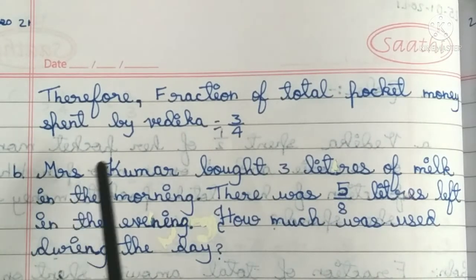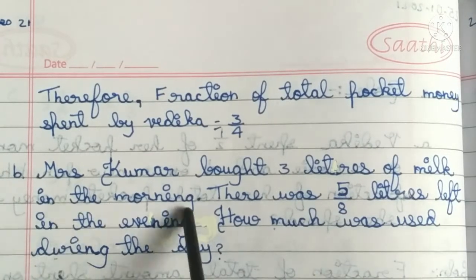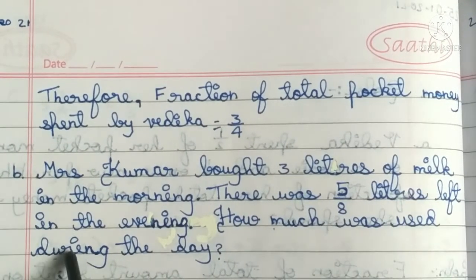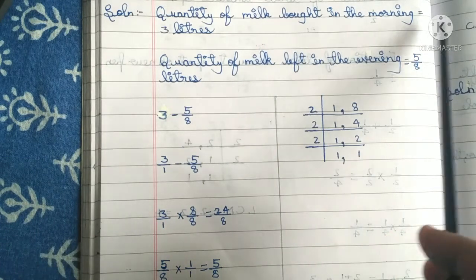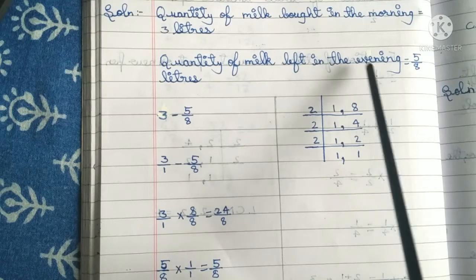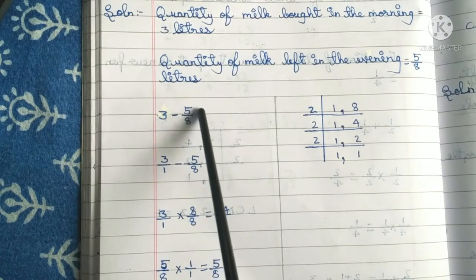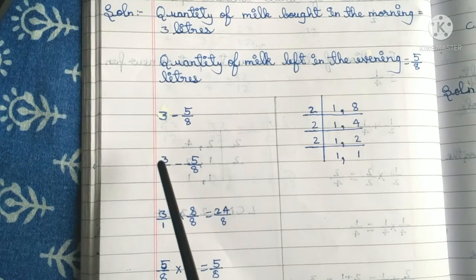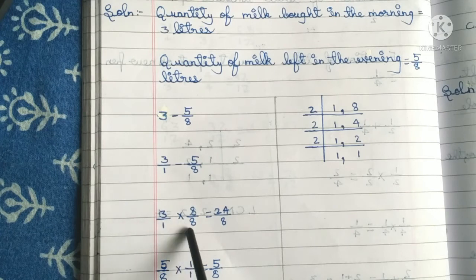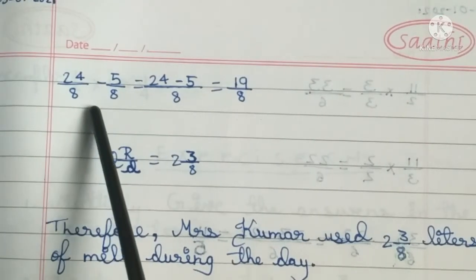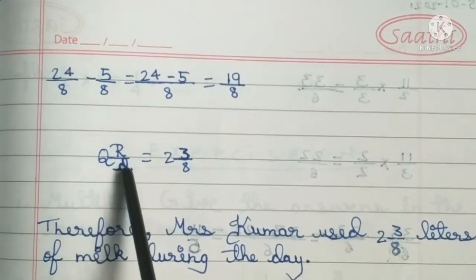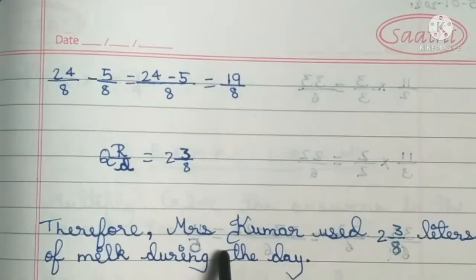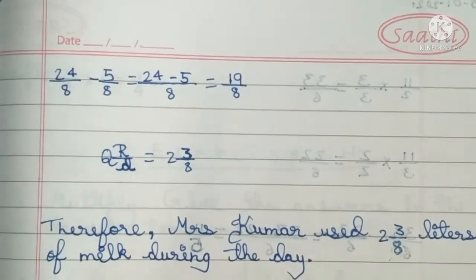Second one: Mrs. Kumar brought 3 litres of milk in the morning. There was 5/8 litres left in the evening. How much was used during the day? Solution: Quantity of milk bought in the morning is 3 litres. Quantity left in the evening is 5/8 litres. Therefore, 3 minus 5/8. LCM is 8. 3/1 multiplied by 8/8 is equal to 24/8. 24/8 minus 5/8 is equal to 19/8. With the mixed fraction, Q remainder by D is equal to 2 and 3/8. Therefore, Mrs. Kumar used 2 3/8 litres of milk during the day.